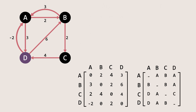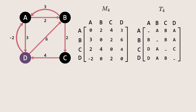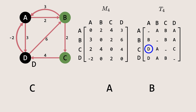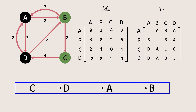Once we check the shorter paths via all the nodes, we will stop. We can then use these final updated matrices to construct the shortest path from any pair of nodes. Let's construct the path from node C to B. In the matrix, we can see that the shortest path has a cost of 4. To actually construct it, we look at the previous node in the predecessor matrix, which is node A, so we add A to the path. Next, we find the previous node in the path from C to A, which is D, so we add D. This gives us the shortest path from C to B: C → D → A → B.